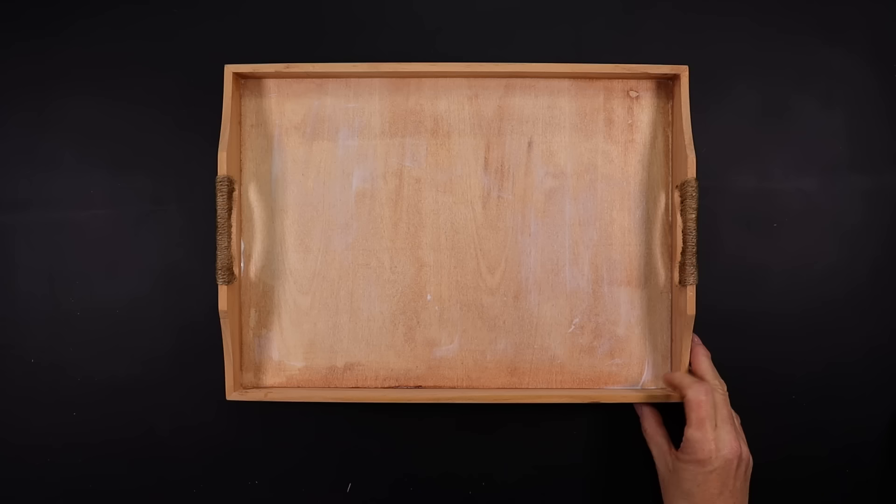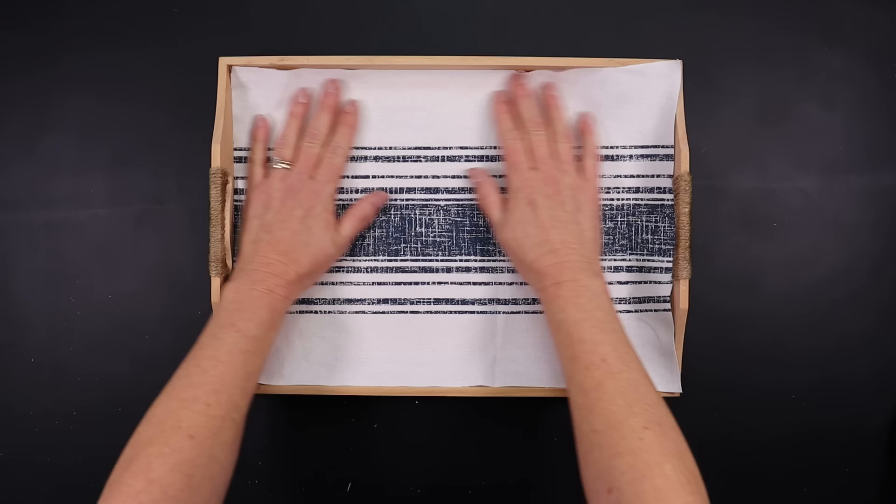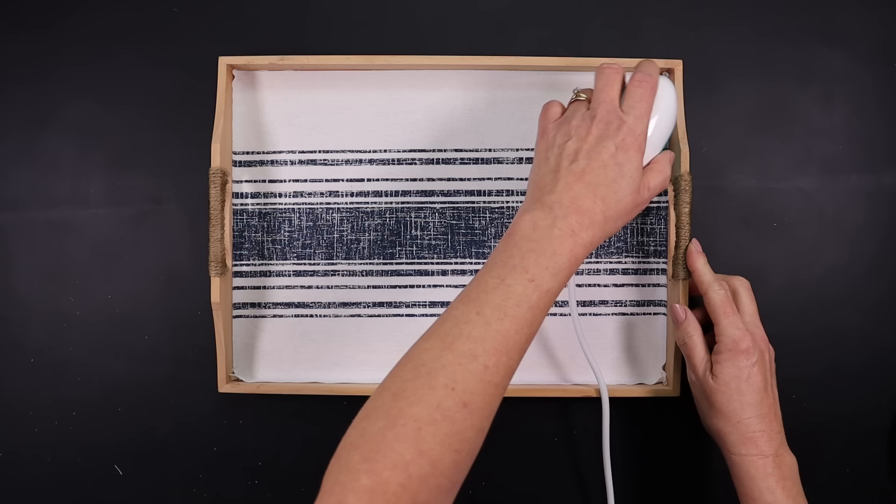The Mod Podge is not completely dry, and that's okay. We're going to place our placemat in the bottom, push it up to the inside edges as far as you can, and then taking that mini iron, go over this to seal that Mod Podge.